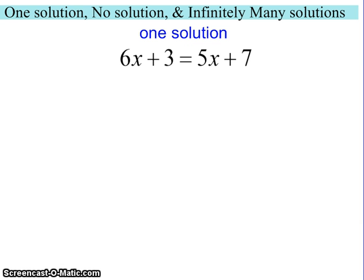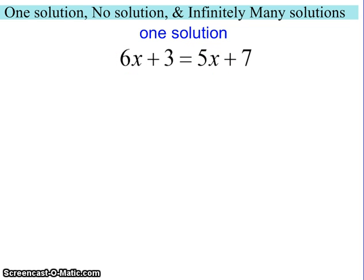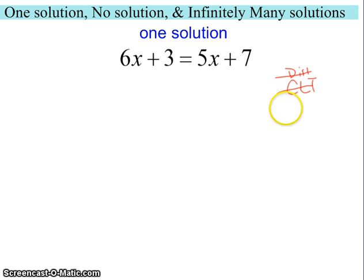Let's start with the basic that we've been practicing. Here's a one solution case. Some things to notice: we have different variables on both sides of the equation. That is going to be a good hint that we have something that's one solution when we have different variables on both sides. But let's solve this and see what we end up getting. We would start by looking to see if we need to distribute, and in this case there's nothing to do there. I'm going to look to see if I have to collect like terms, and in this case I don't. So now I'm going to work with my variables and get them on one side.